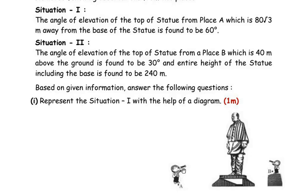At point A he was at ground level, but at point B he is 40 meters higher than ground level. He is standing on a base which is 40 meters high and from there looks at the top of the statue, where the angle of elevation was found to be 30 degrees. The total height of the statue including the base is given as 240 meters. The student used an instrument called an inclinometer, which helps in finding angles like angle of elevation and angle of depression.